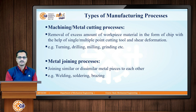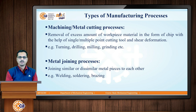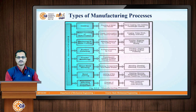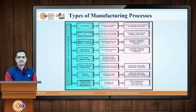The fourth basic manufacturing process is metal joining. By using metal joining processes, we can join similar or dissimilar metal pieces to each other. Examples include welding, soldering, and brazing. So these are the four basic manufacturing processes. This slide shows a summary of all the manufacturing processes discussed, along with their principles and the main philosophy behind them.